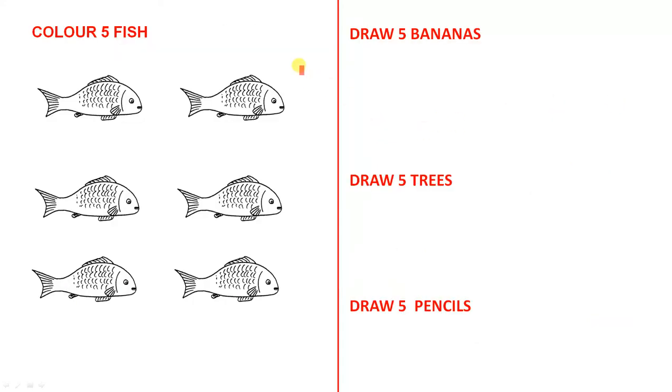We all know how students love coloring in and they would be asked to color 5 fish. They can pick any 5 they want. And students in kindergarten love to draw. And here are just 3 examples of drawing 5 bananas, 5 trees, 5 pencils and you would give them many more opportunities to do drawing.